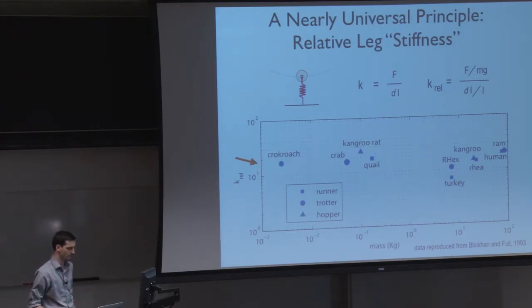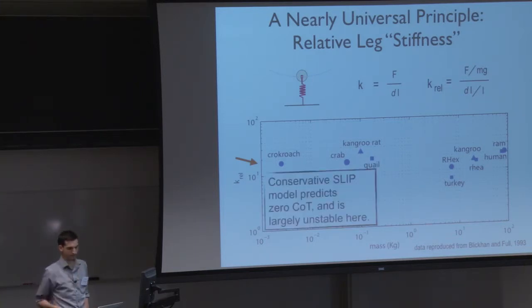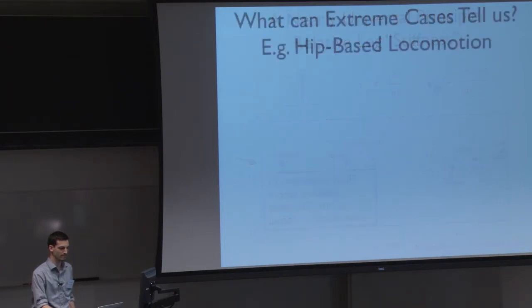And if we try to take a conservative SLIP model to predict what's going on here, we see that, first of all, there's no prediction of cost of transport, so it doesn't say anything about energy. But also, we find that that SLIP-based models are, for the most part, they tend to be unstable in this range of relative stiffness. And there are some fixes and adjustments, but the point is that there's not a lot of claims that a conservative model can make about this relative leg stiffness. So what can other extreme cases of locomotion tell us that might lead to a different kind of model? And I want to focus on hip-based locomotion here.